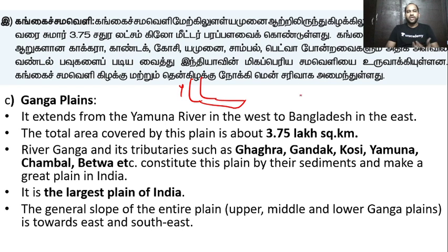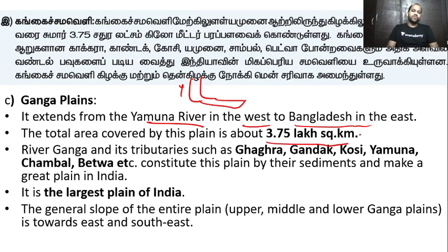In Bangladesh, the Ganga is called Padma. It extends from the Yamuna River in the west to Bangladesh in the east. The Ganga Plains cover 3.75 lakh square kilometers. The river Ganga and its tributaries include: Ghaghra, Gandak, Ghosi, Yamuna, Chambal, Betwa, Sone, Ken, and Damodar.